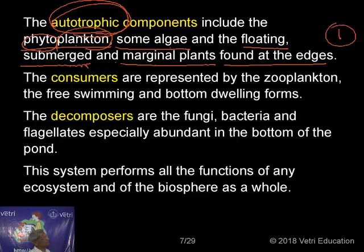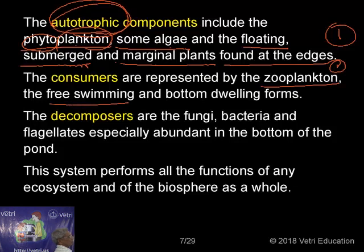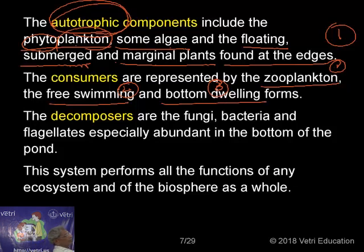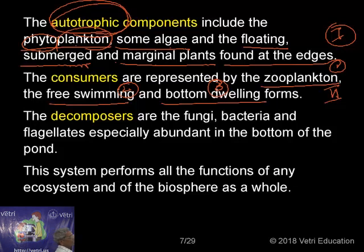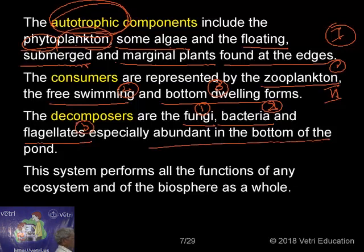The consumers in a pond are represented by zooplankton, free-swimming animals, and bottom dwellers. The decomposers are fungi, bacteria, and flagellates, which are especially at the bottom of the pond. So a pond ecosystem has three structural components: producers, consumers, and decomposers. This system performs all the functions of any ecosystem and of the biosphere.